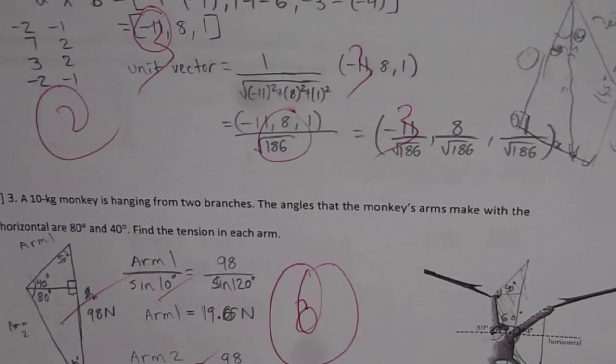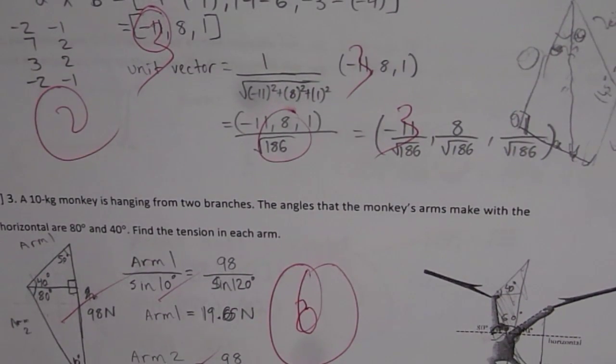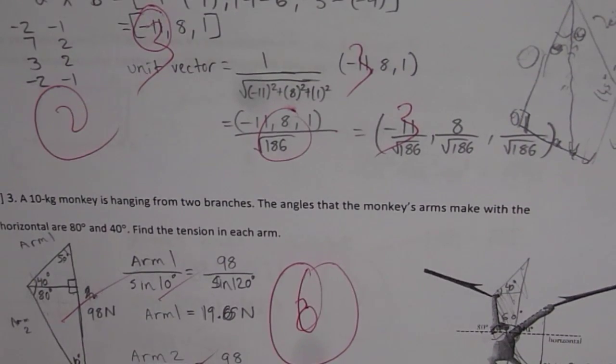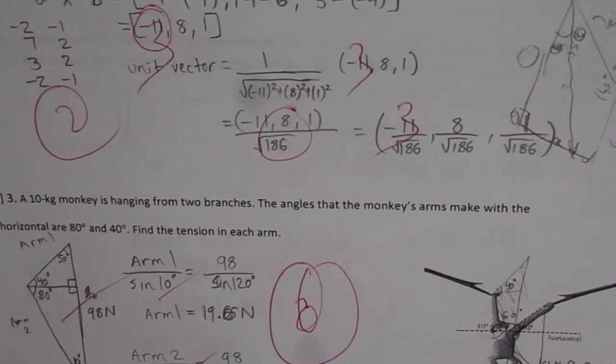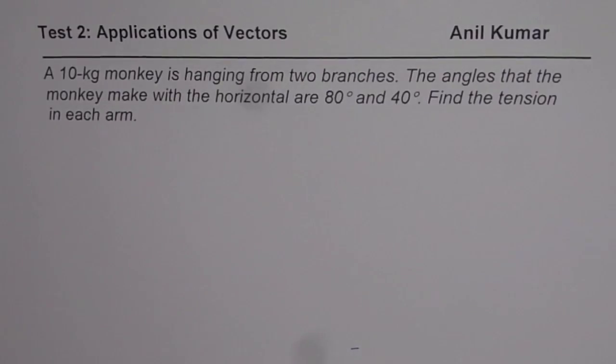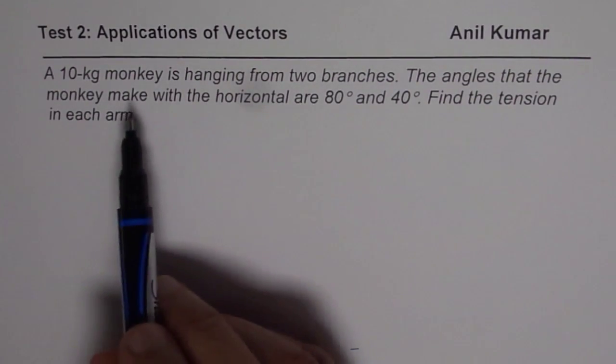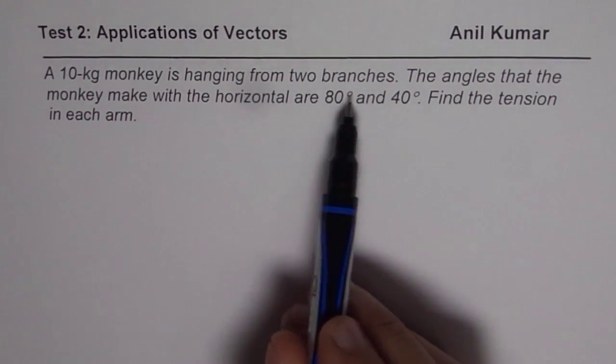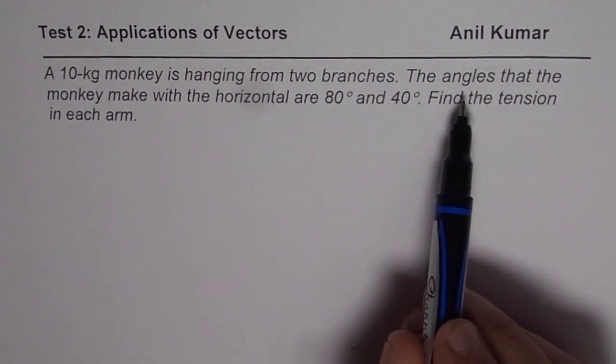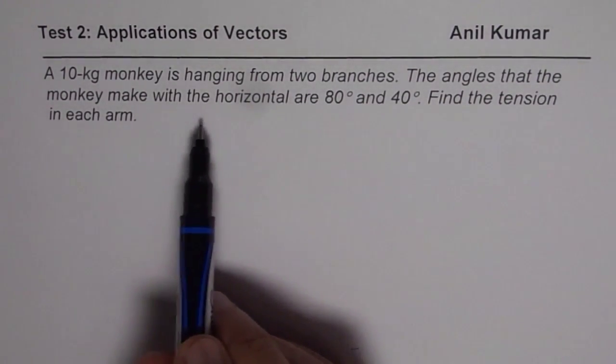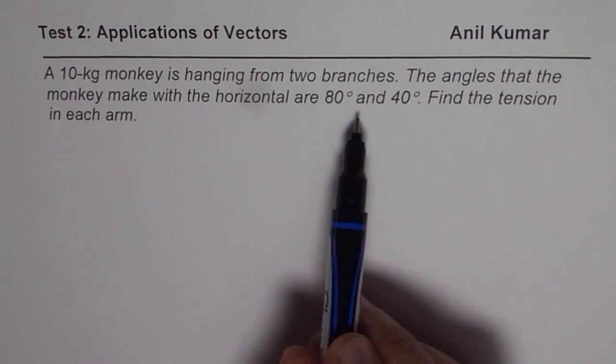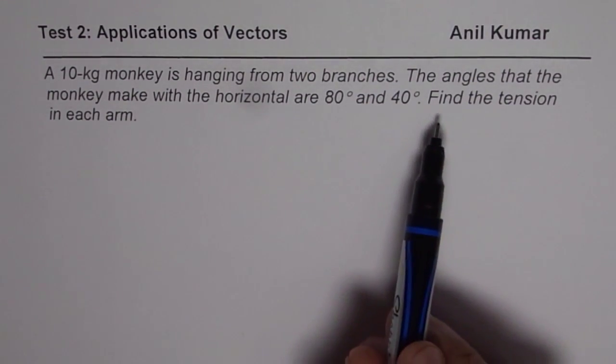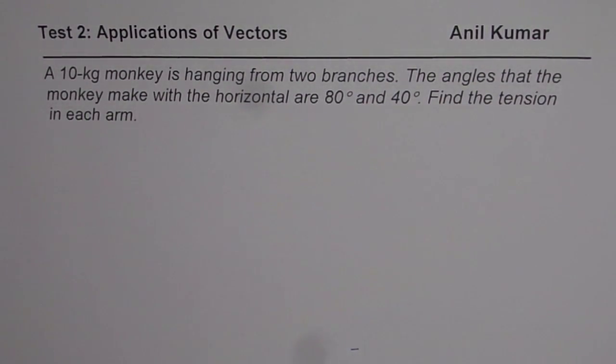I am Anil Kumar sharing with you some questions from the previous test papers. Let us look into this application question in details. The question before us is, a 10 kg monkey is hanging from two branches. The angles that the monkey make with the horizontal are 80 degrees and 40 degrees. Find the tension in each arm.